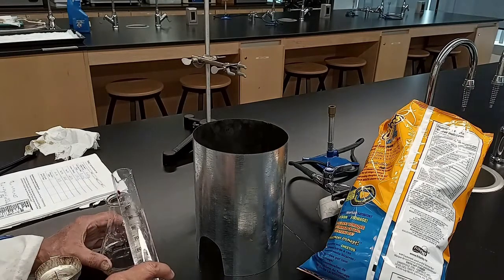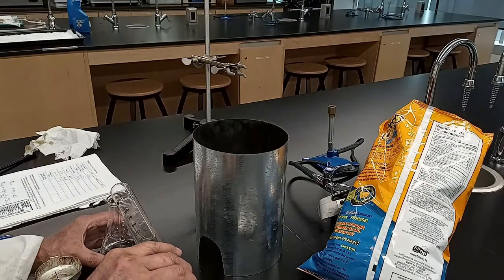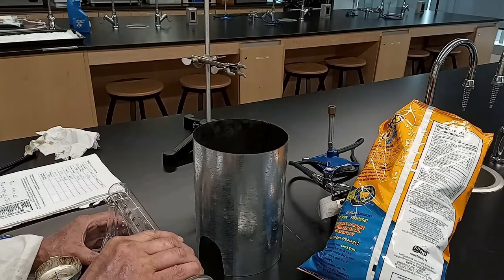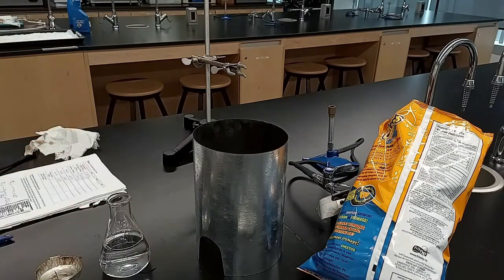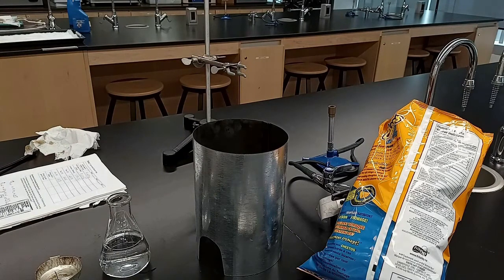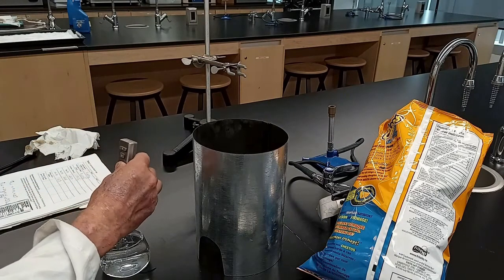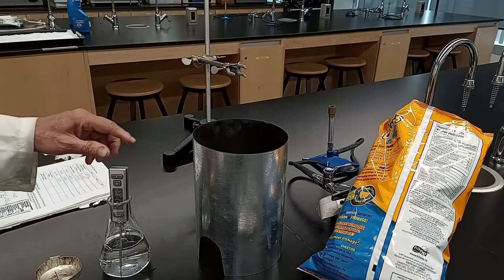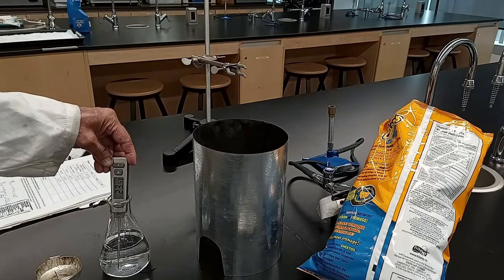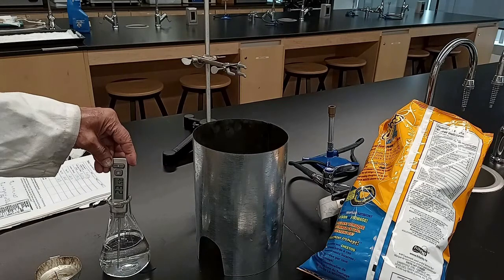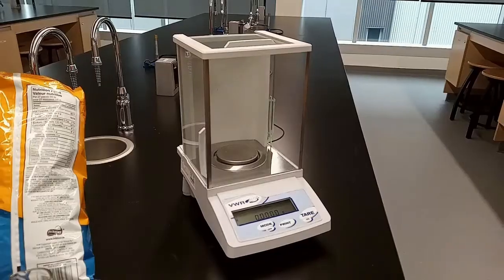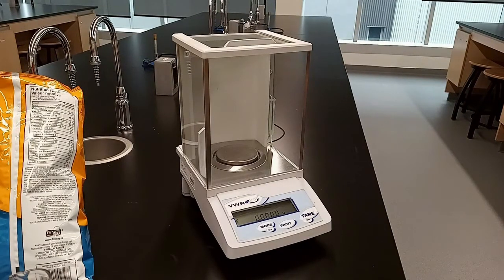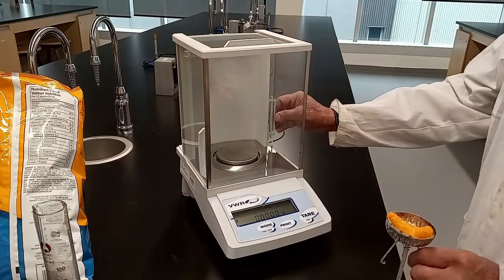Add the second 100 ml of distilled water to the earlier 100 ml already added in the Erlenmeyer flask. Turn the thermometer on and note down the initial temperature of the distilled water. Take the mass of the Cheetos with stand and catch basin.